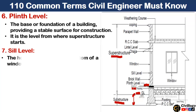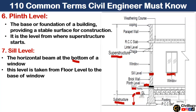Sill level is defined as the horizontal beam at the bottom of the window. As you can see in this picture, this is the sill level which starts from the bottom of the window. This level is measured from floor level to the base of the window.